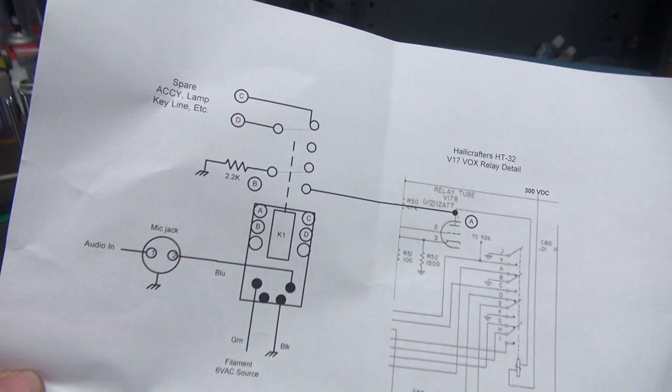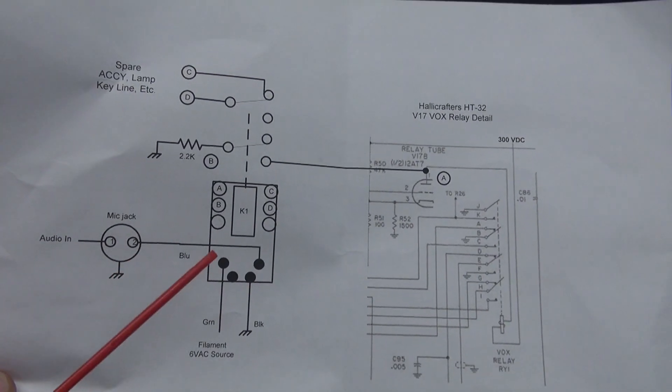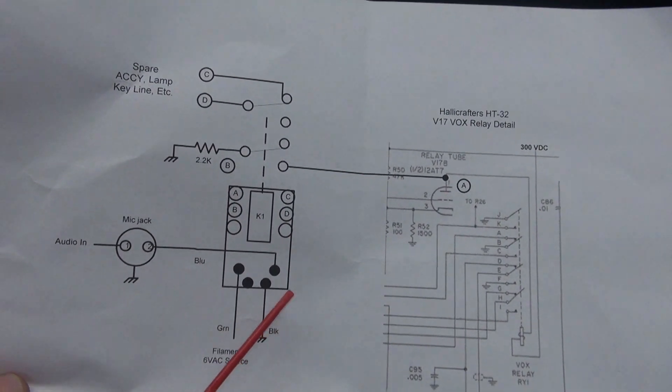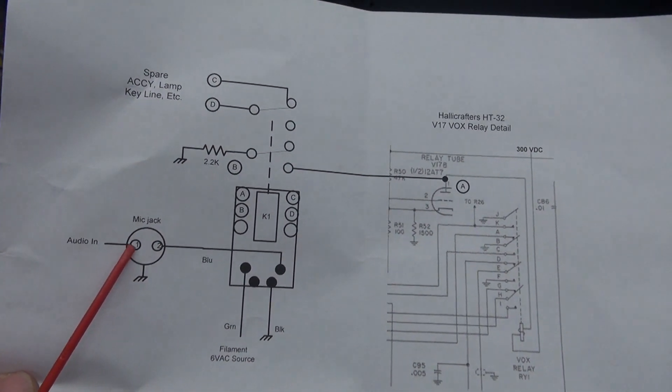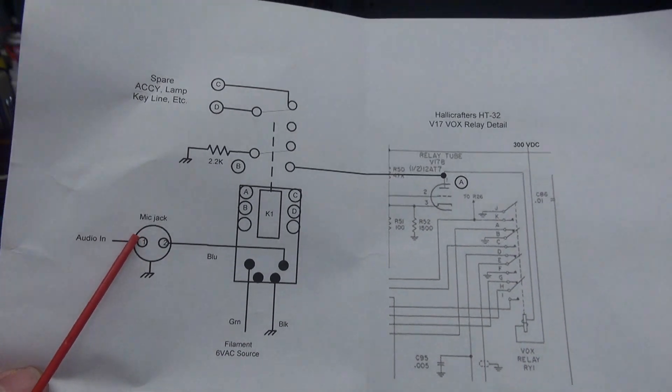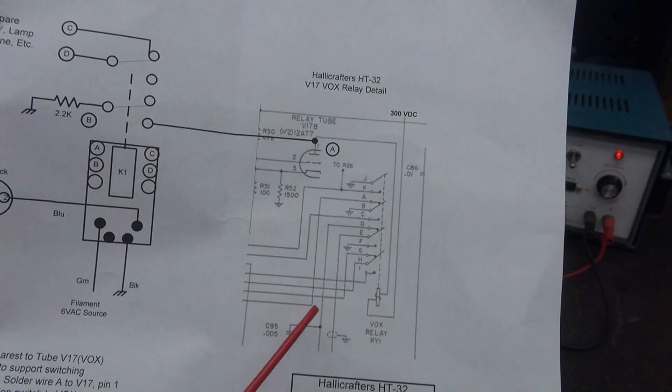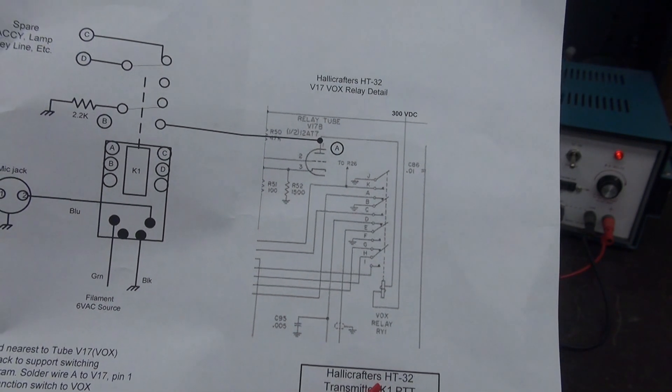Well, let's first take a look at the diagram for the push-to-talk system in the HT32 transmitter. This is my little relay board. Here's the mic jack that you're going to add to the front of your transmitter. This is the original circuitry from the HT32 manual.